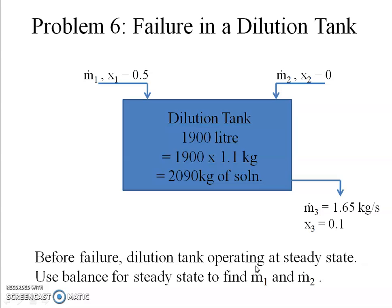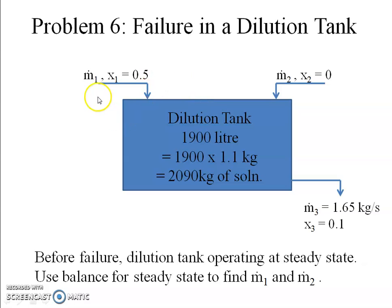Before the failure, the dilution tank was operating at steady state. There were steady-state flow rates for both inlet streams producing an outlet of 1.65 kg/s. First, I'll analyze this using a steady-state balance to find Ṁ₁ and Ṁ₂. The tank capacity is 1900 liters; multiplying by density of 1100 kg/m³ gives a total solution mass of 2090 kg in the tank.